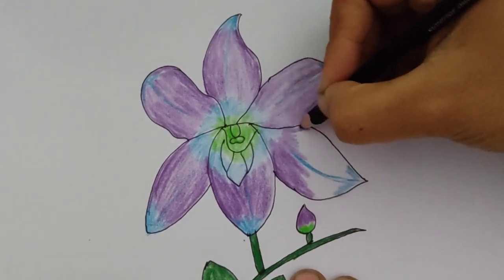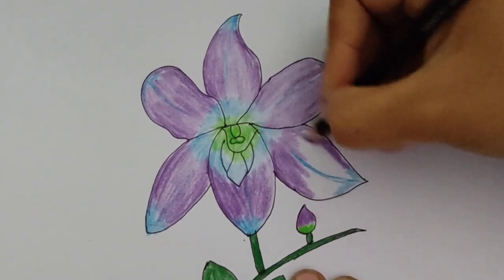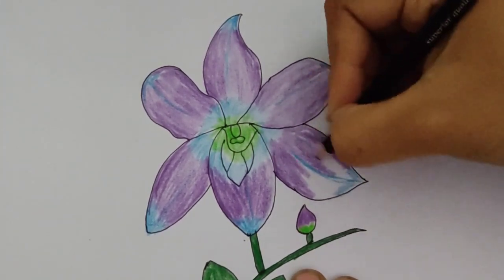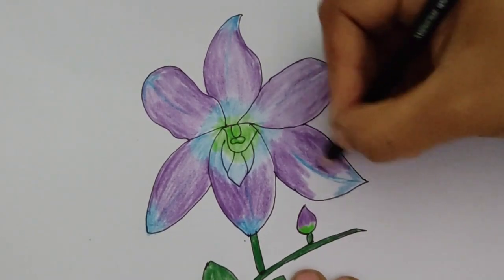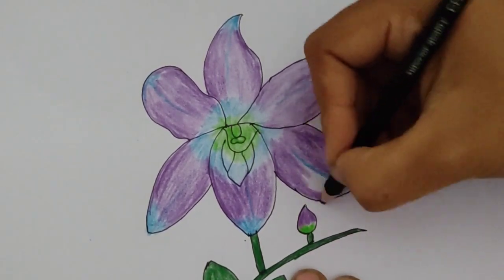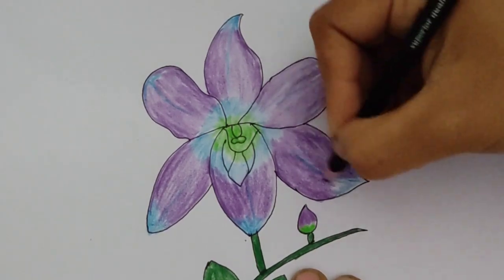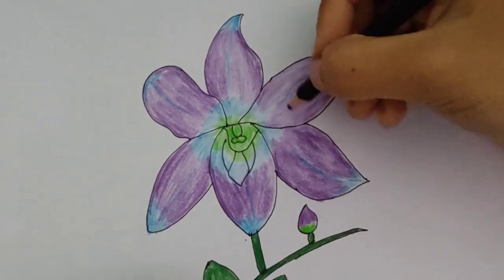Although orchids have a reputation for being symbols of fertility and elegance, different colored orchids have a diverse range of symbolisms. Let's start with the white color.